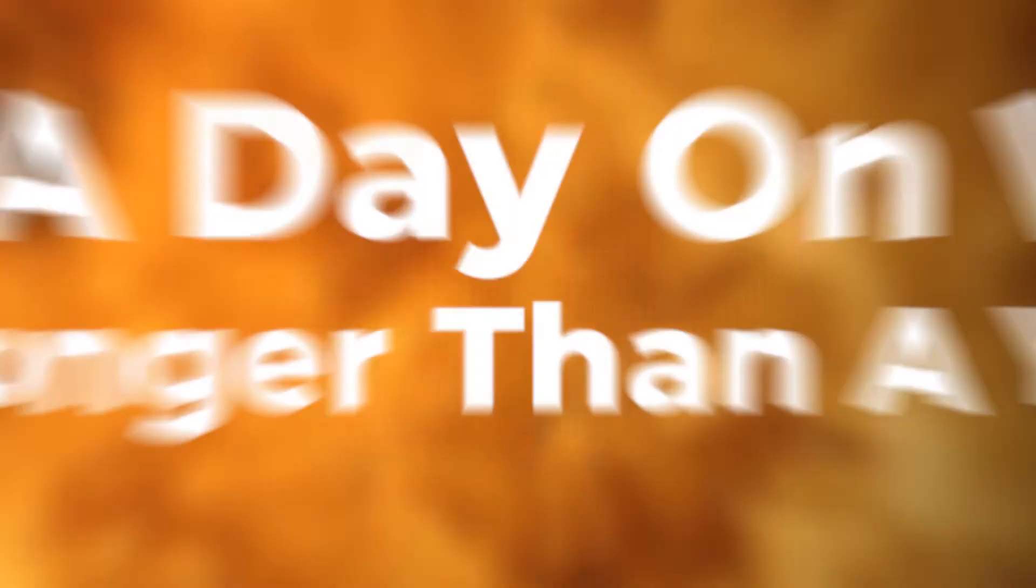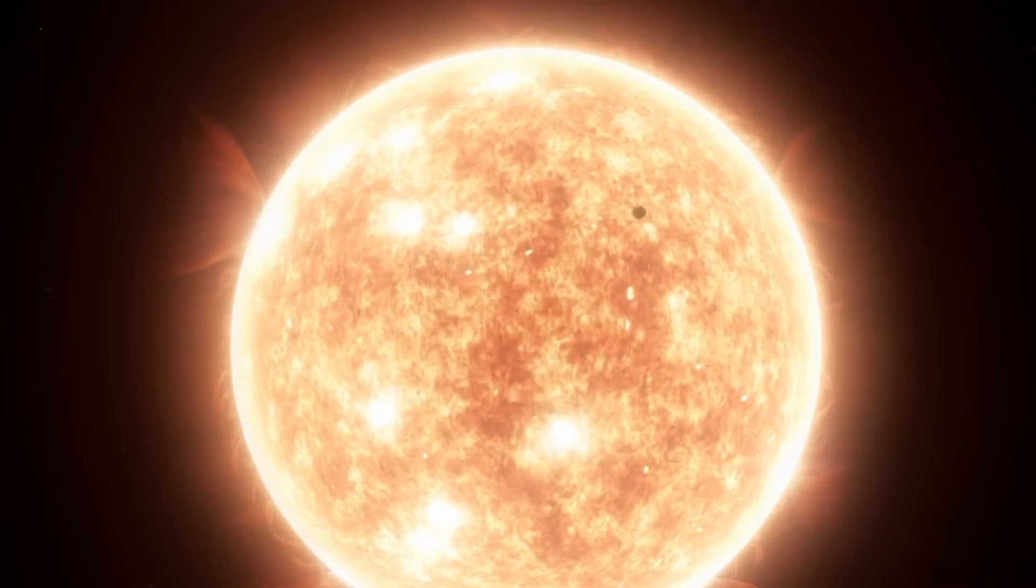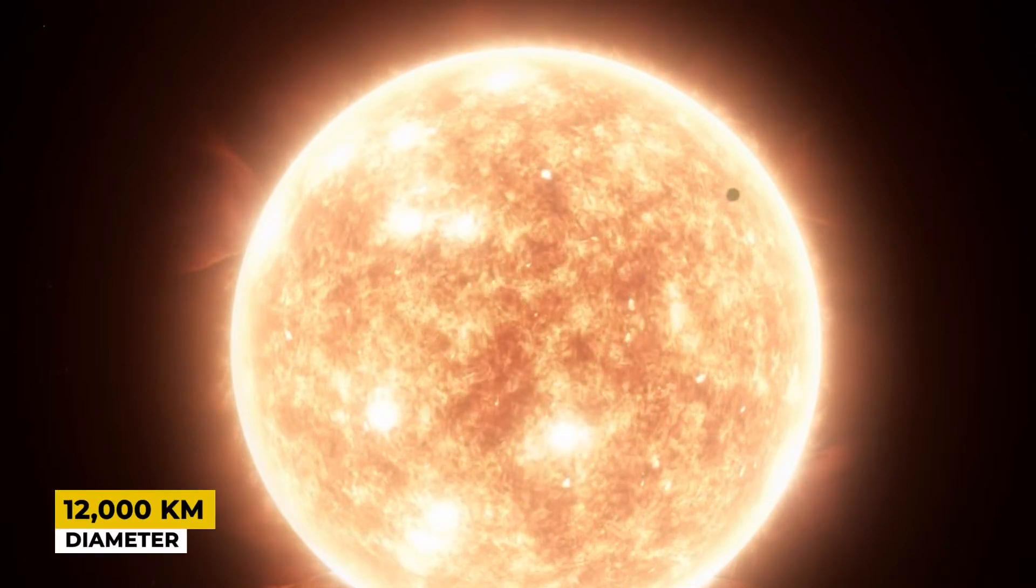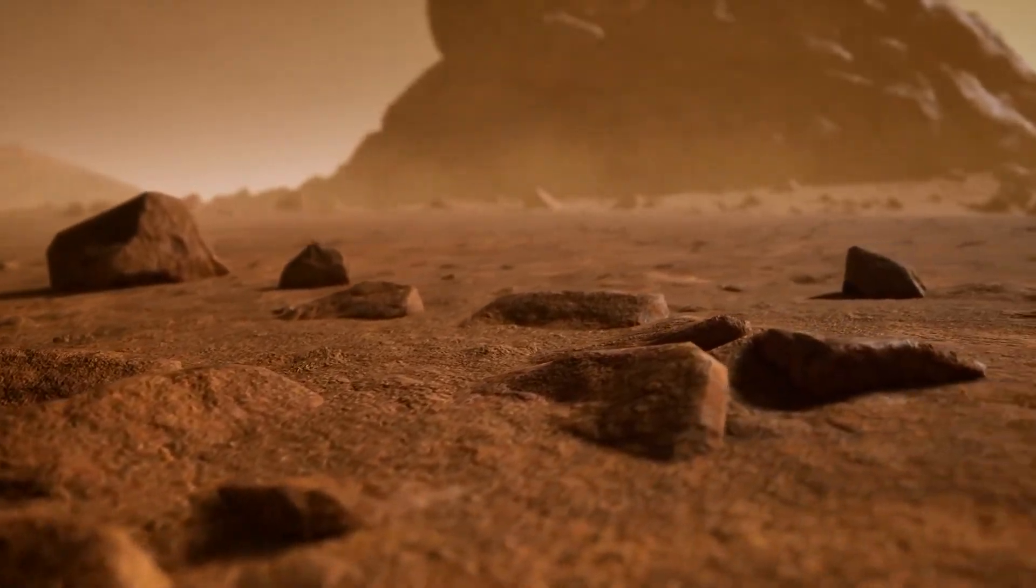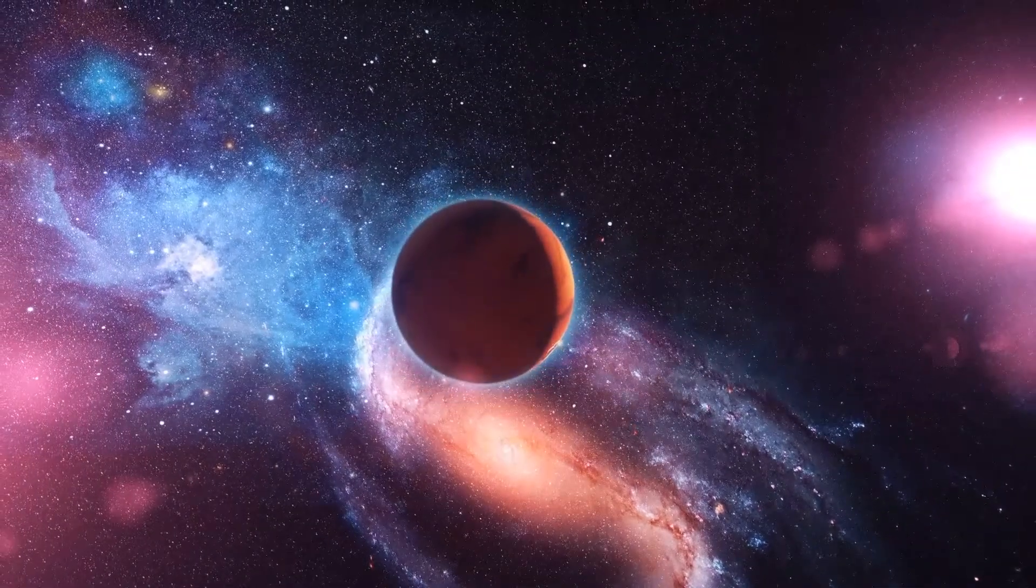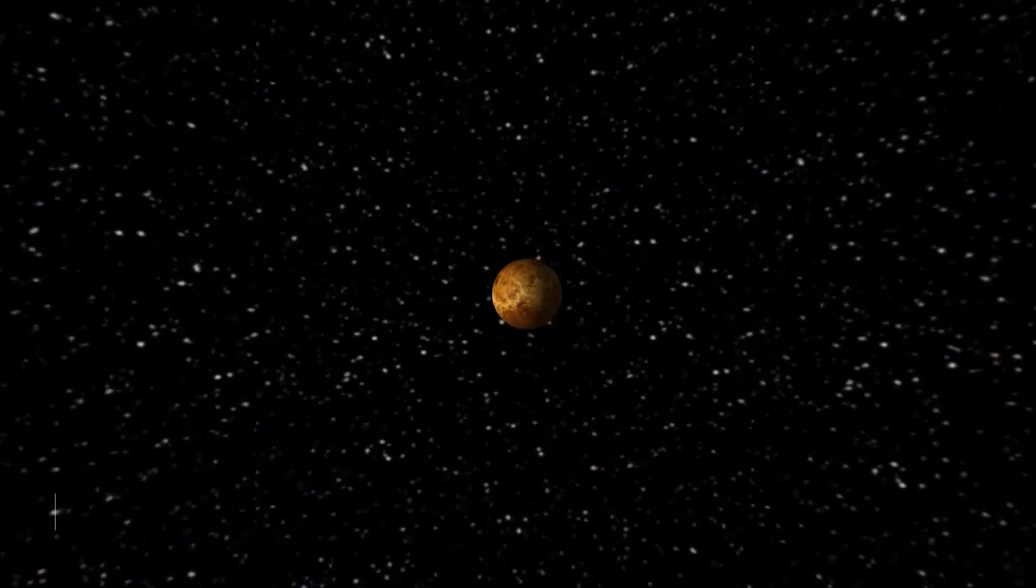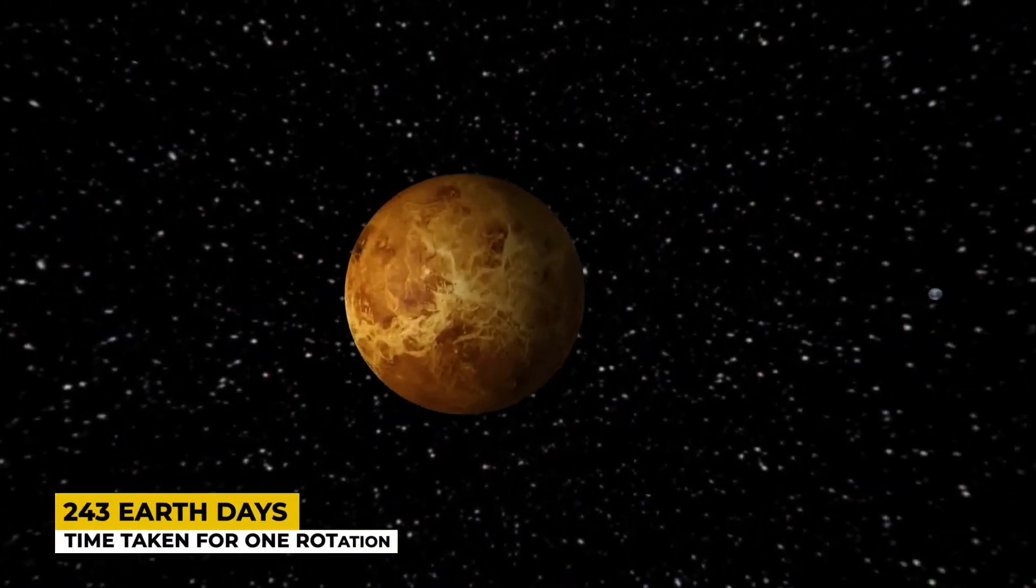The second planet from the sun, Venus has a similar structure to Earth but is slightly smaller with a diameter of around 12,000 kilometers. There is however something peculiar about it: it rotates in the opposite direction as Earth and the majority of other planets. It also rotates quite slowly. It takes 243 Earth days to complete one rotation.